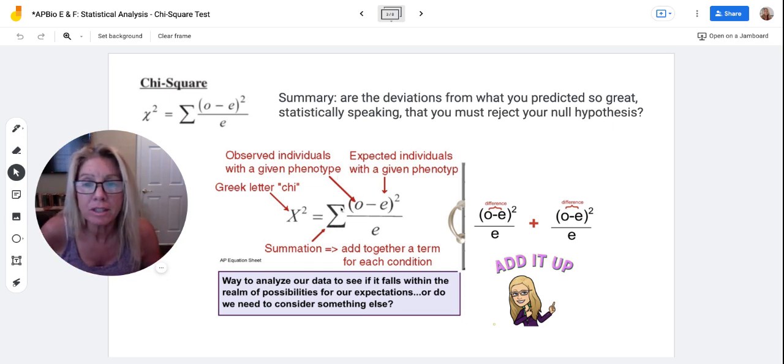So here's the equation itself. Chi-squared, that's just a Greek letter, that's what you're solving for. This will equal, and this Σ means the sum of...